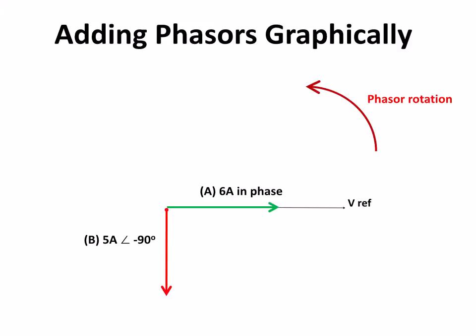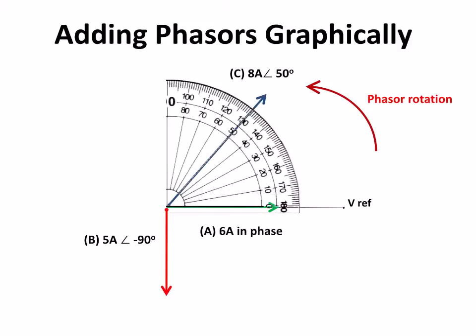Let's put a third phasor in there. We've got eight amps at 50 degrees. It's a positive 50 because it's in front of the reference. If we look anti-clockwise, the 50 comes before the reference so it's a positive angle.